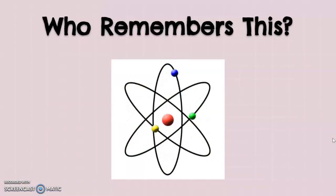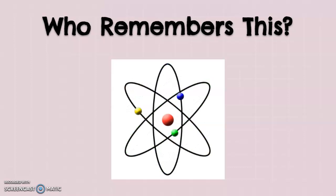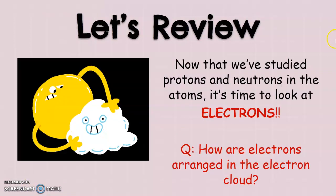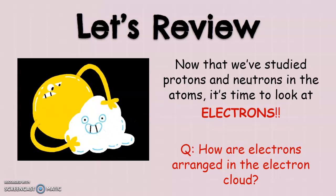Here is a visual representation of an atom. In the middle, in red, we've got those positively charged protons and those neutral neutrons, and then we have our electrons in the cloud outside the nucleus. We've talked about protons and neutrons — now let's talk about electrons, and how they are arranged outside of the nucleus of the atom.